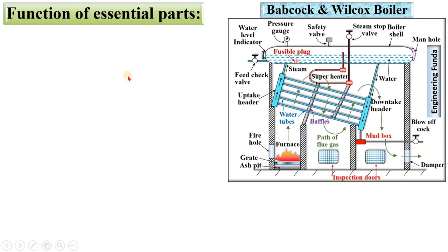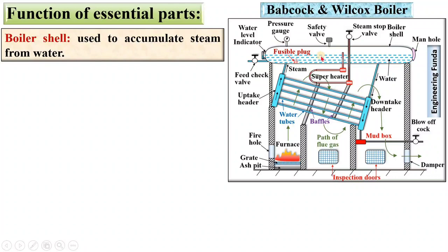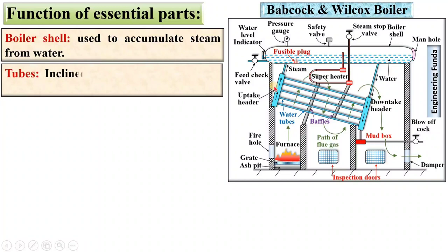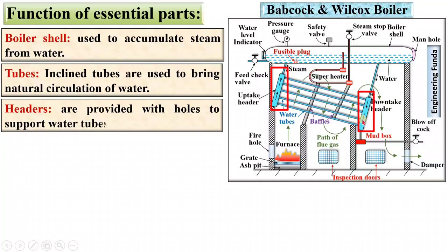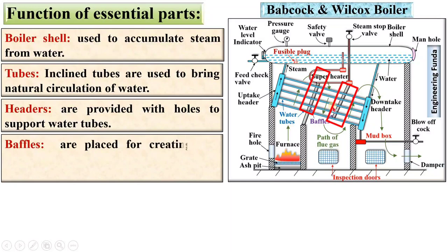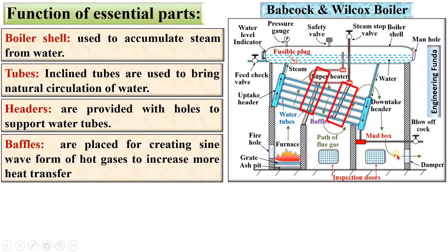Now, the function of essential parts of the Babcock and Wilcox boiler. First, the boiler shell is used to accumulate the steam from the water in the upper portion of the shell. Next, tubes — inclined tubes are used to bring about natural circulation of water; the inclination of the tube is generally 15 degrees with the horizontal. Headers — a downtake header and an uptake header are provided with holes to support the water tubes. Baffles are placed to create a sine waveform path of hot gases to increase the time for transferring more heat.